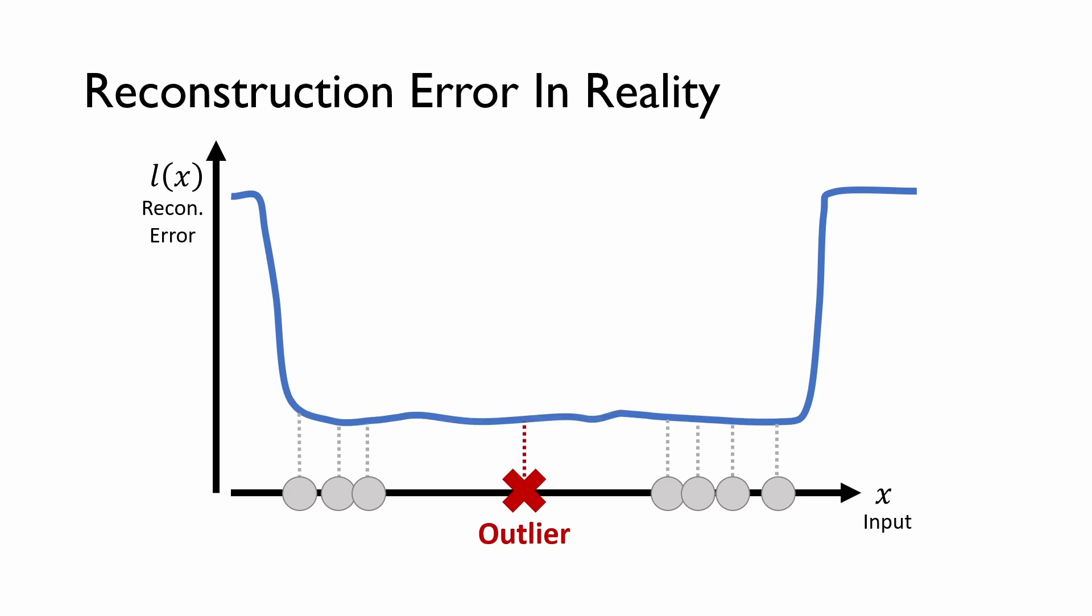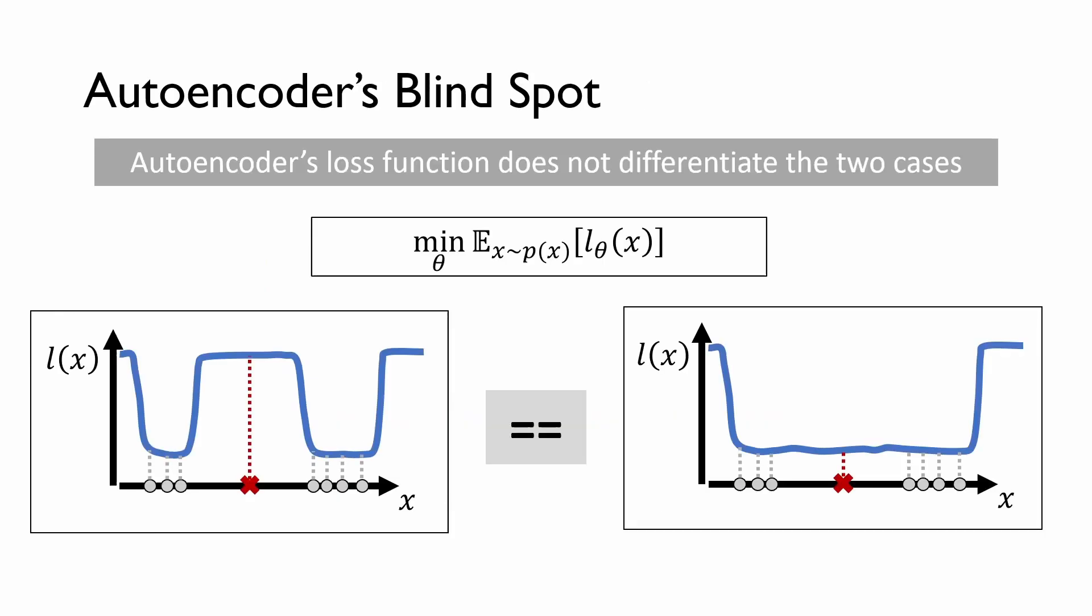However, when outlier reconstruction occurs, the reconstruction error can be low in the outlier region. The problem of an autoencoder is that its objective function does not differentiate these two cases, as the training reconstruction errors are the same. So there is no incentive for an autoencoder to give larger reconstruction error to an outlier. We aim to fix this glitch in an autoencoder's objective function.